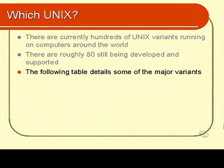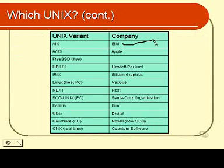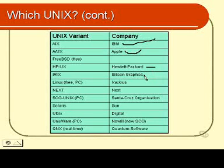I'll now show you a table of some of the major variants of Unix. As you can see, some of the major players are represented here. We have IBM, Apple, Hewlett-Packard, Silicon Graphics, Sun, and Digital. These are all very big players in the computer software market.